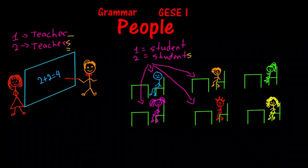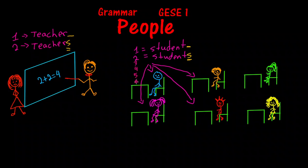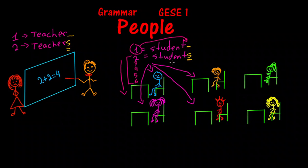So over here, when we talk about one, we don't write anything. But when we talk about more than one, we add an S. So this could be two students, three students, four students, five students, six students or more. When we talk about two or more, we put an S — 'students'. When we talk about just one, we don't put an S, we say 'student'.